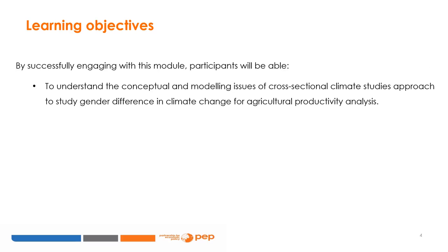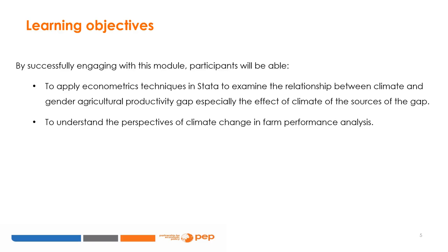We expect that participants will be able to understand the conceptual and modeling issues of a cross-sectional climate studies approach for studying the impact of climate change on the gender agricultural productivity gap for smallholder farmers. You should also be able to apply econometric techniques in STATA to examine the relationship between climate change and the gender agricultural productivity gap (GAPG), especially the effect of climate change on the sources of the gap.